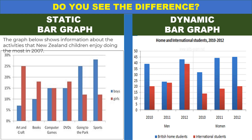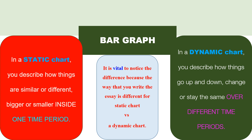If it is dynamic, use the words increase, decrease, decline, and similar vocabulary. If it is a static chart, you have to use a different vocabulary. The static chart describes how things are similar and different, big or small in one time period. But in the dynamic chart, it is shown how things go up and down, change over the period, stay the same, or fluctuate. The static chart shows how things are the same and different, big and small, whereas the dynamic shows how things go up, down, change, or stay the same.